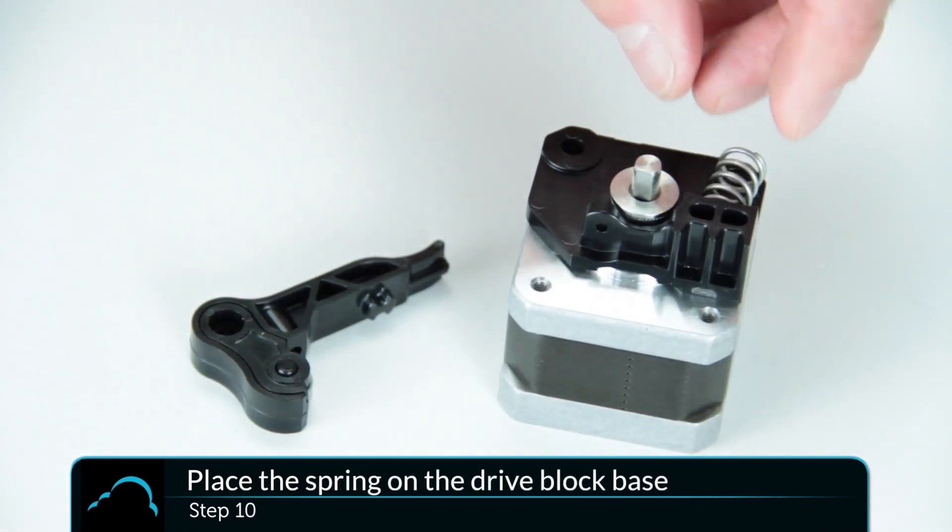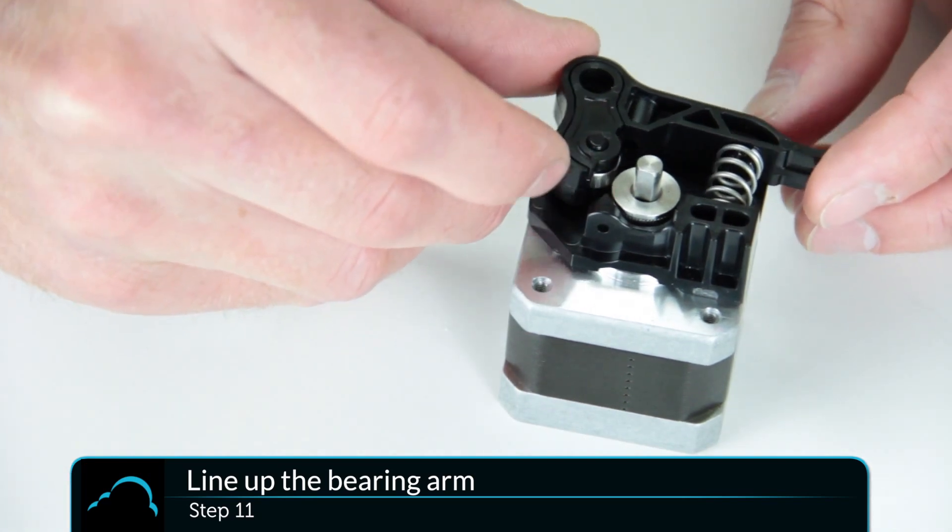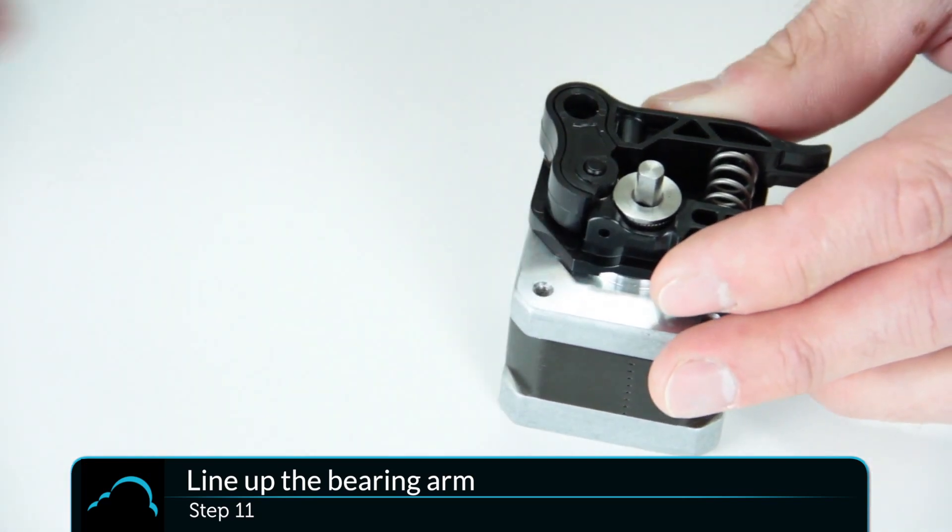Next, place the spring over the peg on the drive block base. Line up the corresponding peg on the bearing arm so that it fits over the other end of the spring.